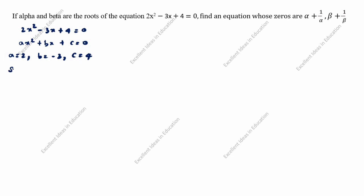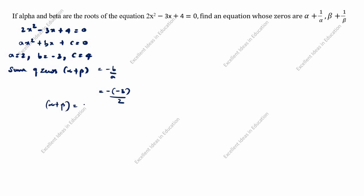The sum of zeros formula: alpha + beta = -b/a. The value of b is -3, so it becomes minus of minus 3 divided by 2. Therefore, alpha + beta = 3/2.